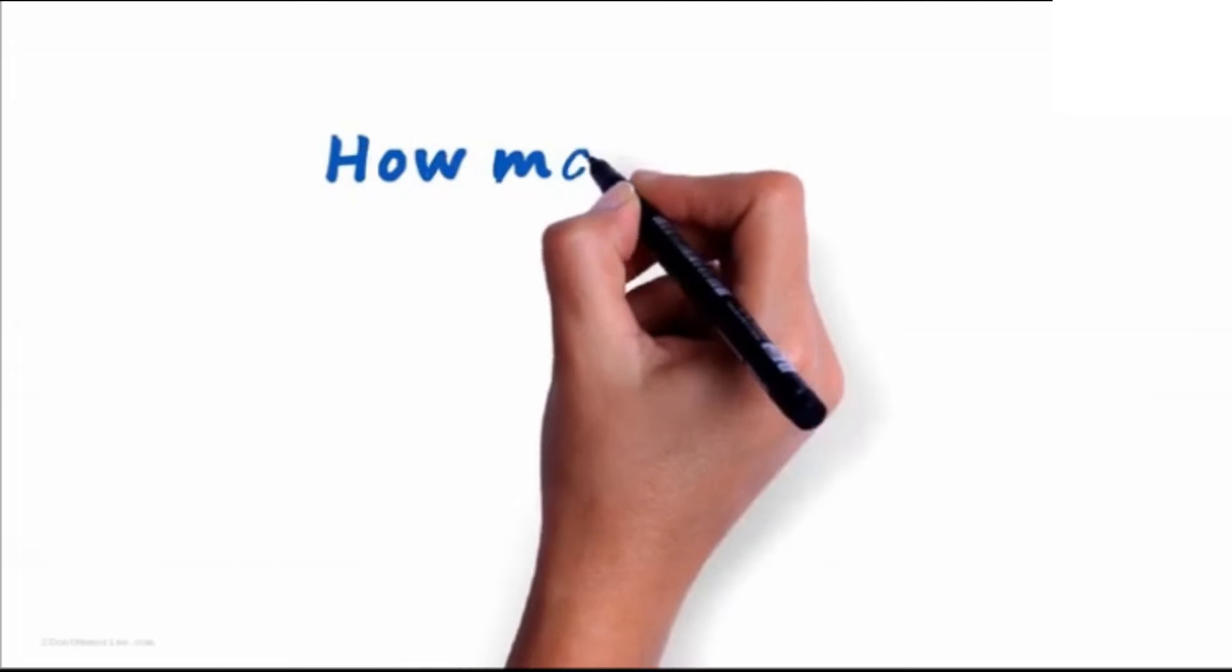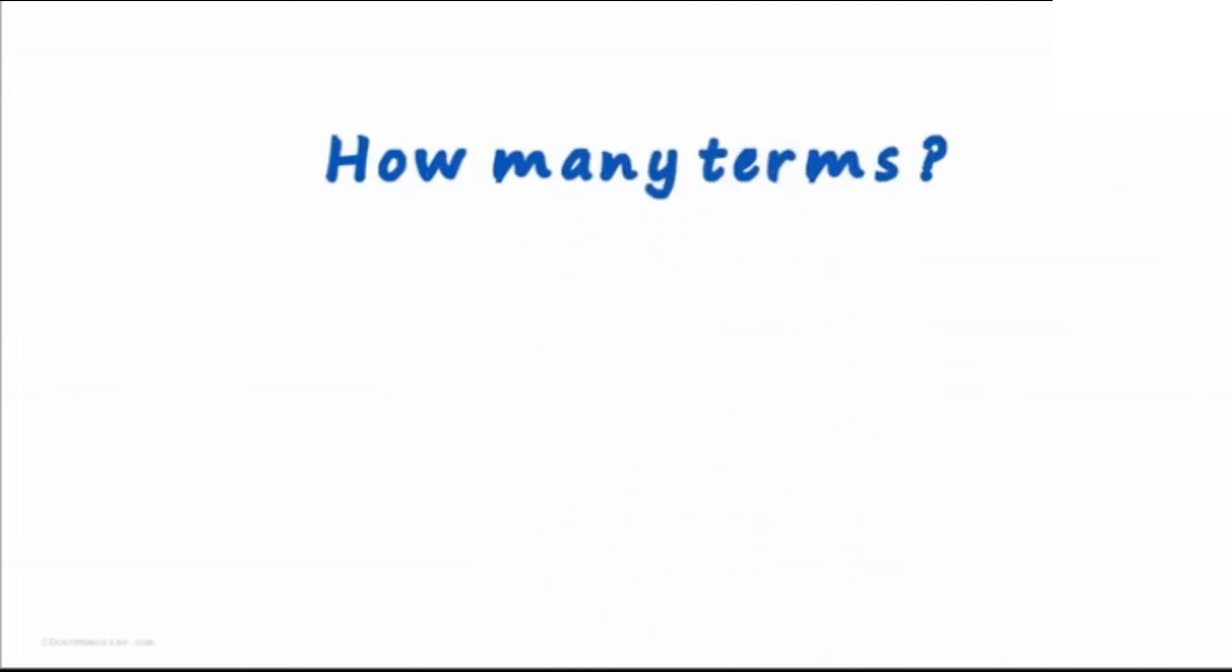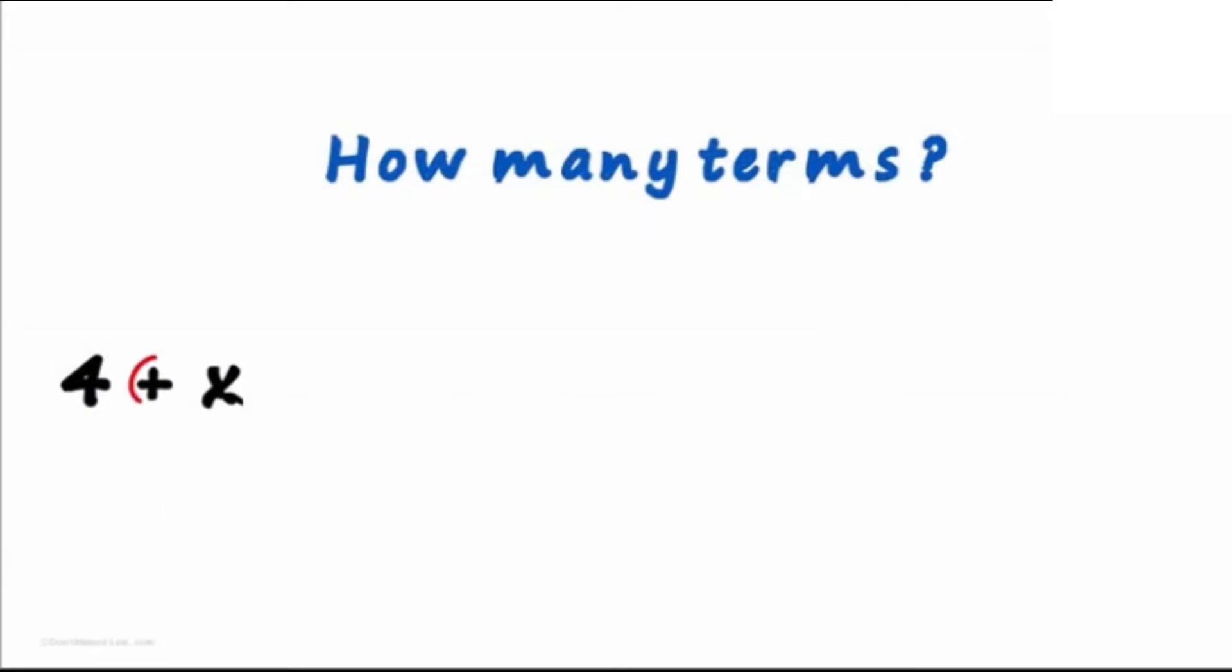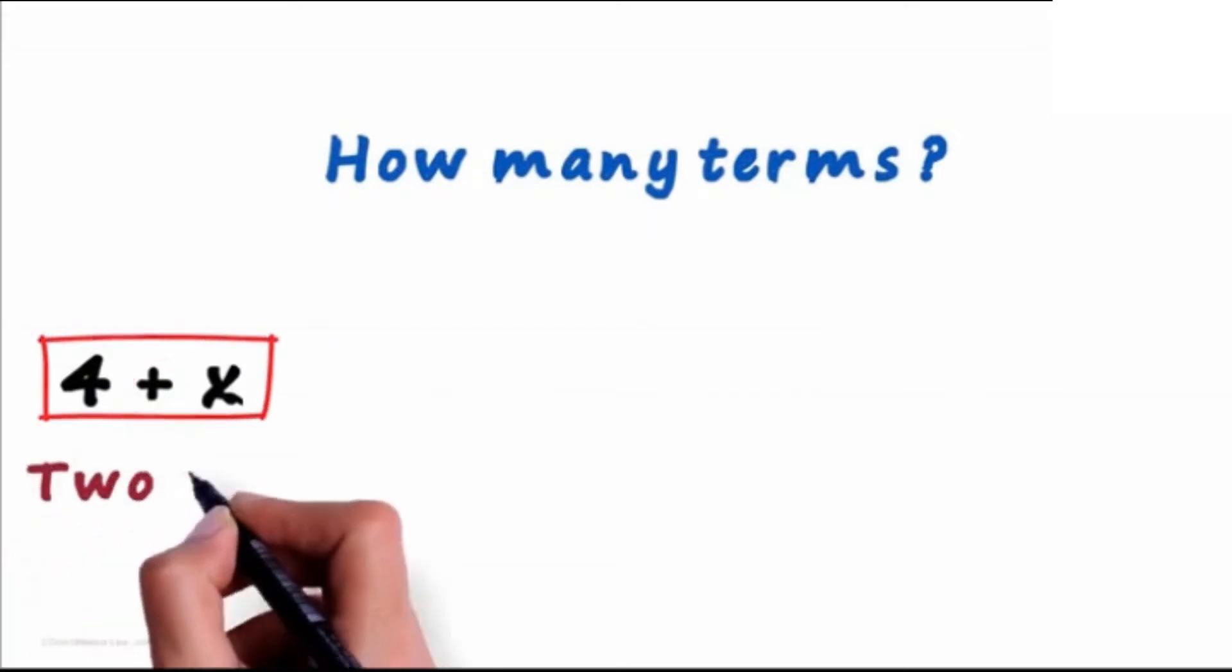Let's look at a few expressions and find out how many terms they have. Here's the first expression, 4 plus x. We can see a plus sign here. It means that this expression has two terms, 4 and x.